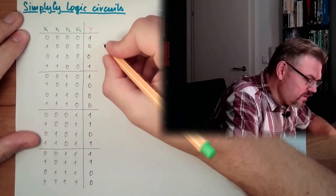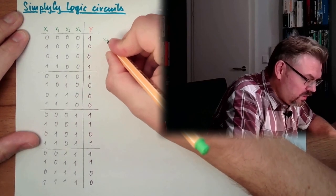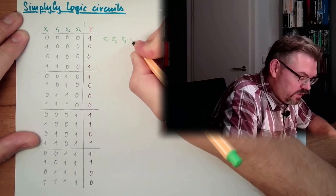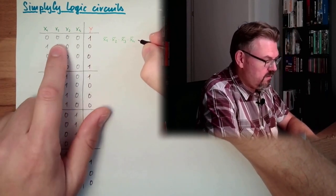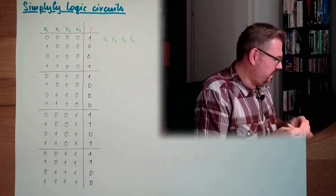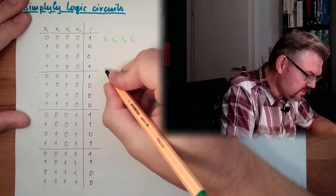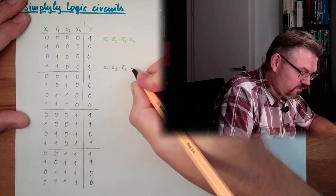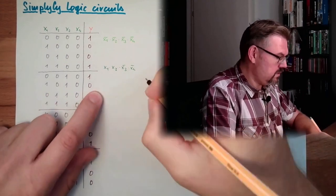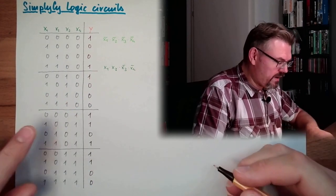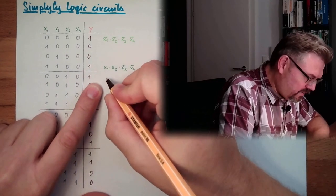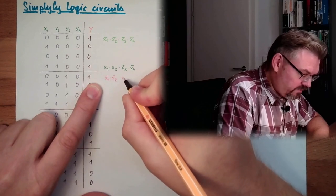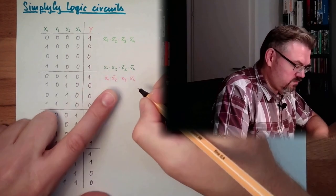So, first line. It was NOT x1 and NOT x2 and NOT x3 and NOT x4. This was the first line. Next line. What is this? This is x1 and x2 and NOT x3 and NOT x4. Next line. Right here. All my colors I have. Now I can show them. NOT x1 and NOT x2 and NOT x3 and x4. It's this line.